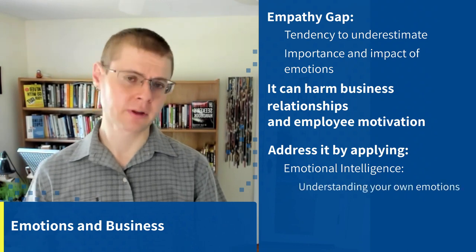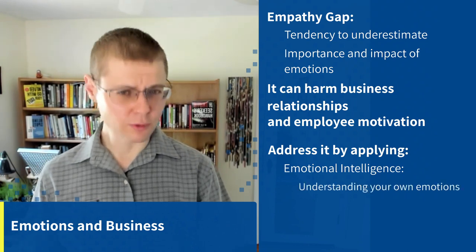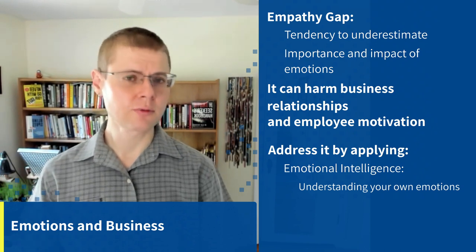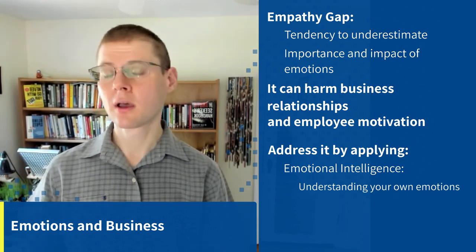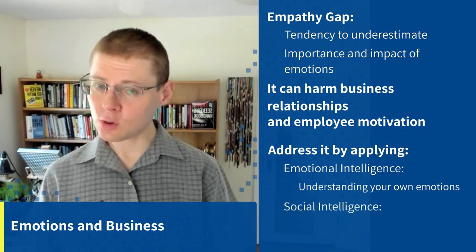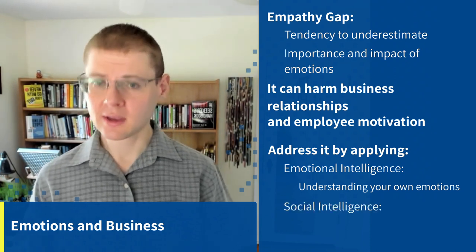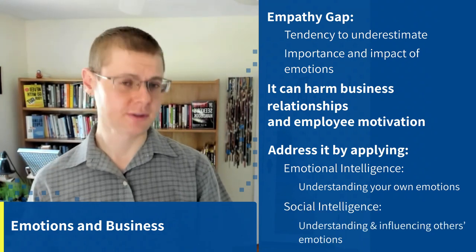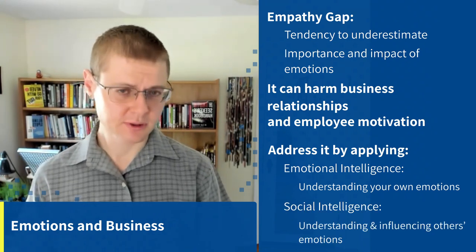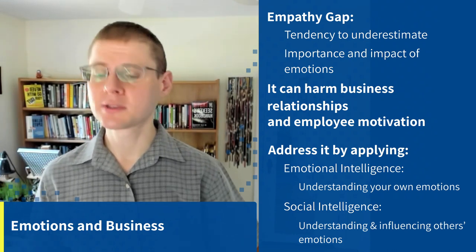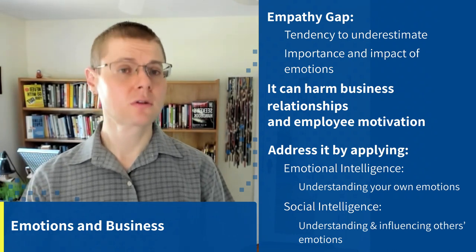One is emotional intelligence — understanding your own emotions — because if you don't understand your own emotions, you won't realize where your emotions about other people's emotions might be steering you astray. And then social intelligence, which is the skill of understanding and influencing other people's emotions and relationships. So apply emotional intelligence to your own emotions and social intelligence to other people's emotions.